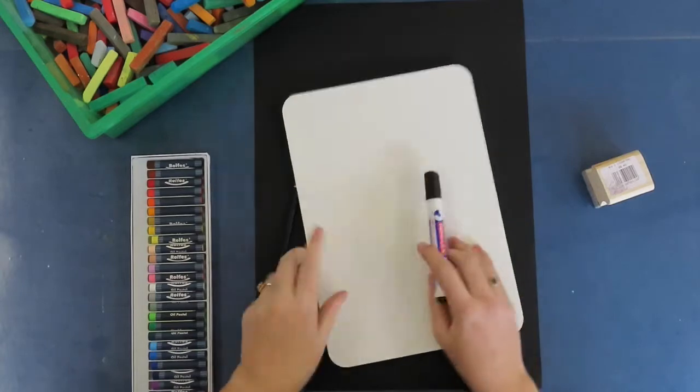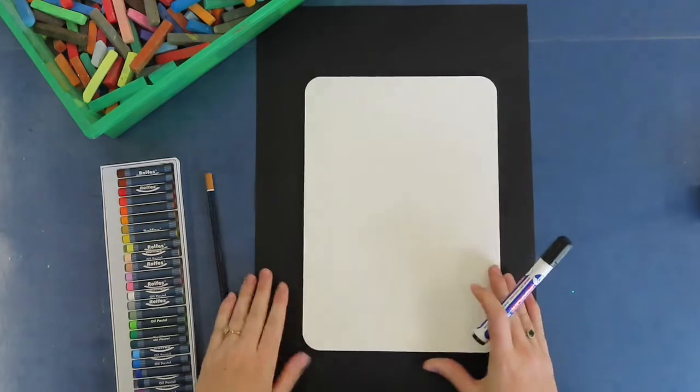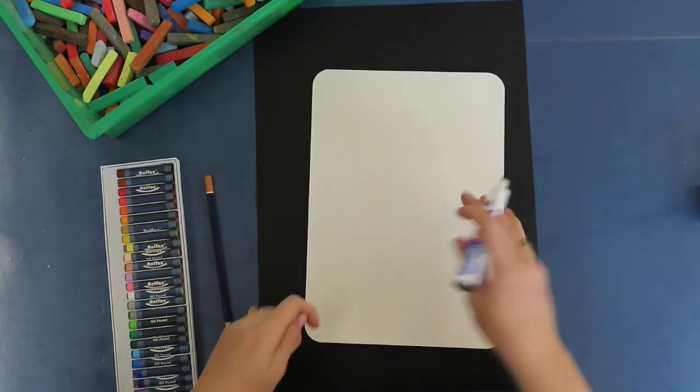Okay, so I hope you enjoyed learning about snakes. We're going to draw our own snake picture with oil pastels and chalk on black paper. The first thing I'm going to do is have a look at my whiteboard and we're going to practice this together.